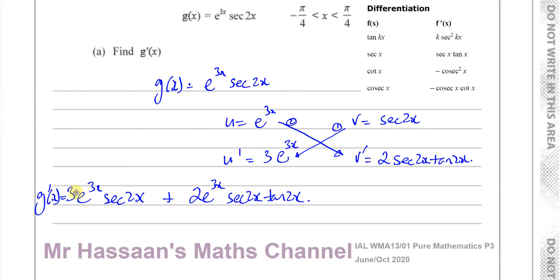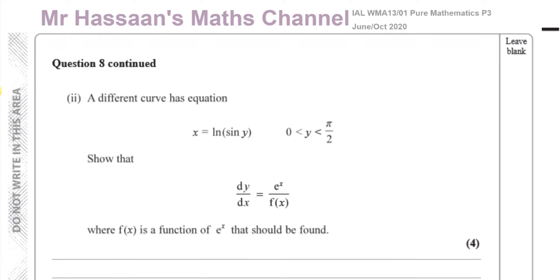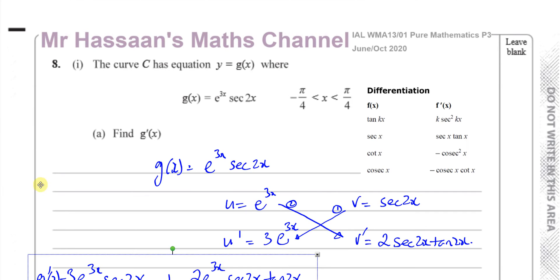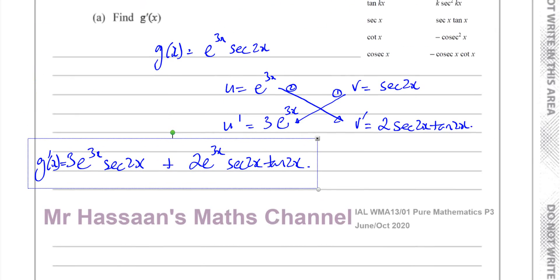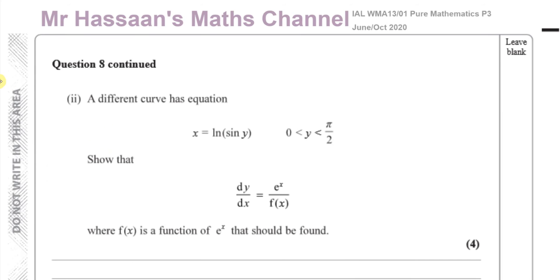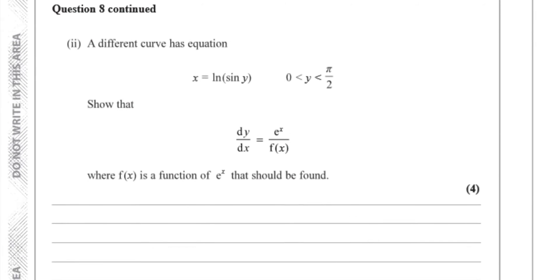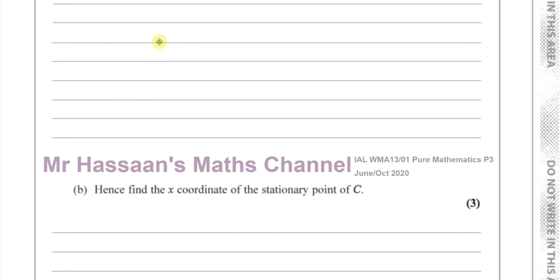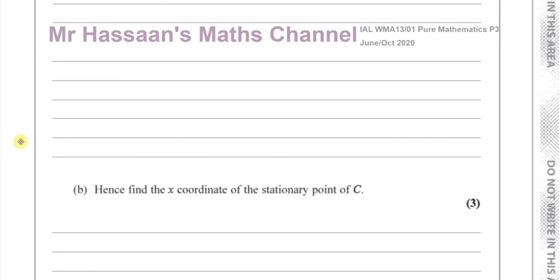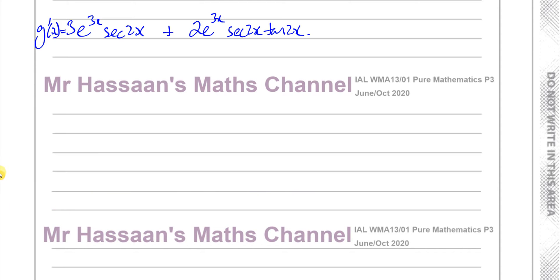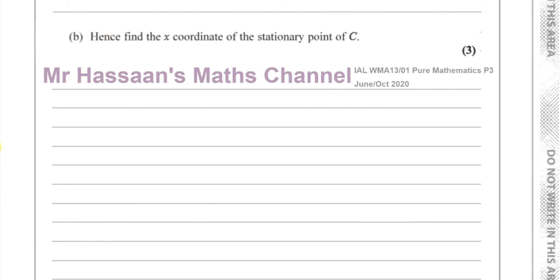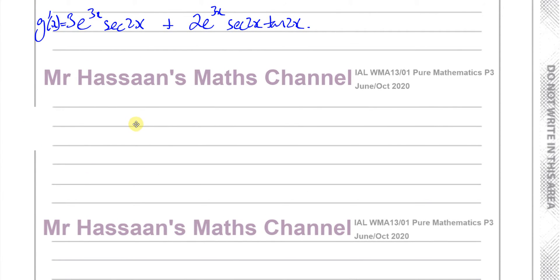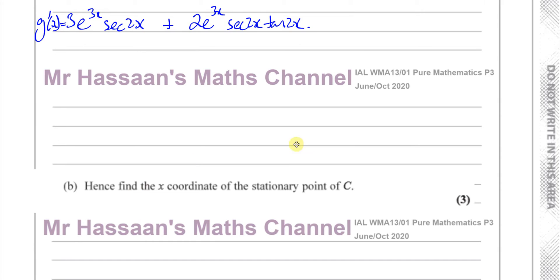They didn't ask us to factorize it or anything like that — they just said find g dash of x, the differential of g(x). So that's the answer to part a. I'm sure we're going to have to use this answer. Now part b says: hence find the x-coordinate of the stationary point of the curve.